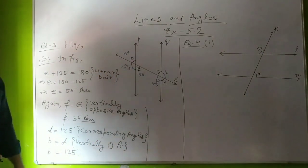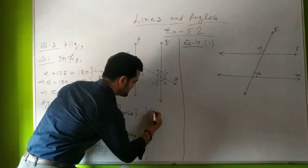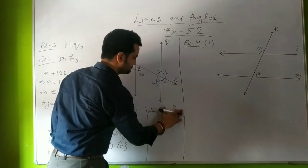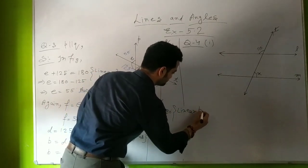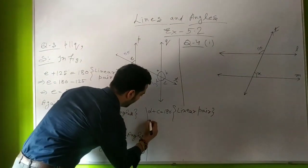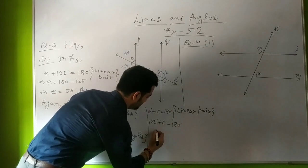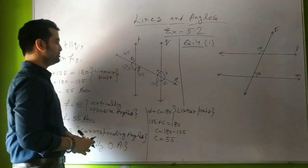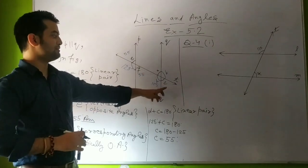Again looking at the figure, D and C are a linear pair, so D + C = 180 degrees because they are a linear pair. Substituting the value of D: 125 + C = 180, so C = 180 − 125, giving C = 55 degrees. You can also see that F and C are corresponding angles, so with that relation we could also find the value of angle C.